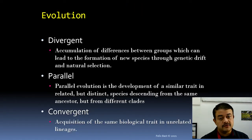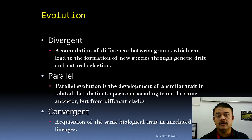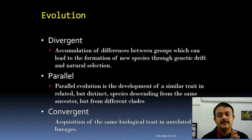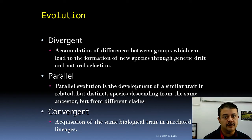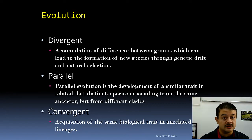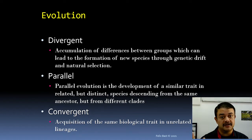We will take up a complete course on evolution, but in summary there are two main kinds of evolution: divergent and convergent — and of course parallel evolution, which is a kind of convergent. Divergent evolution means the accumulation of differences between groups, leading to the formation of new species. Divergent is the true form of evolution.